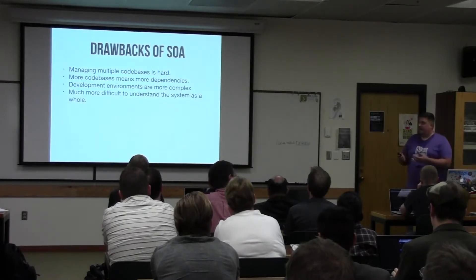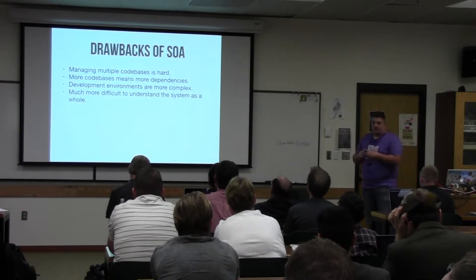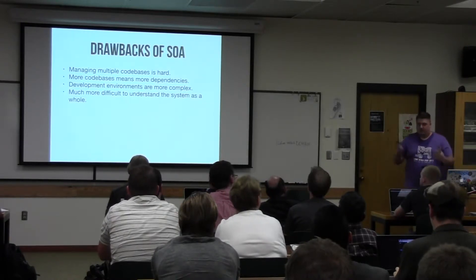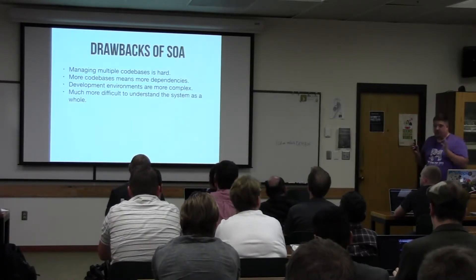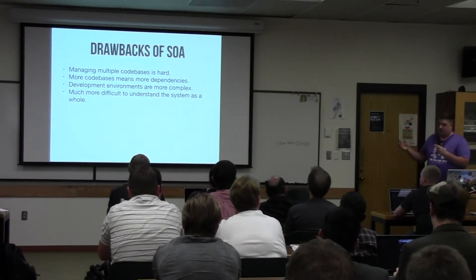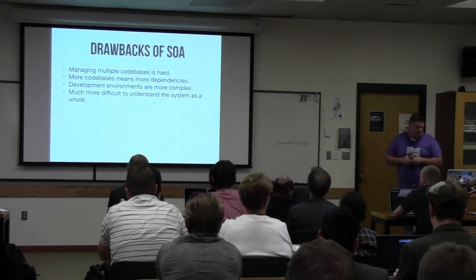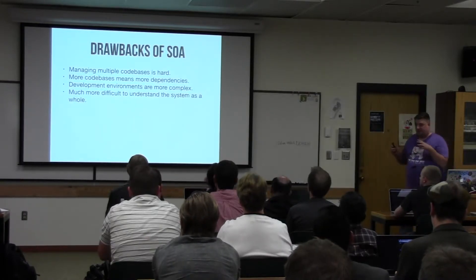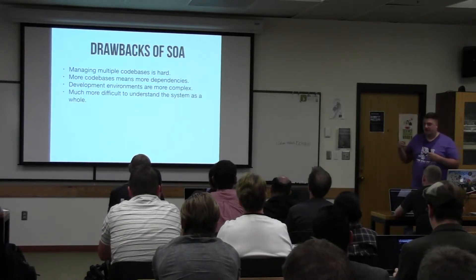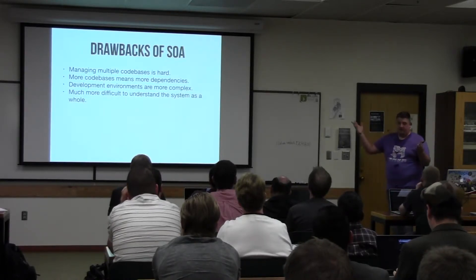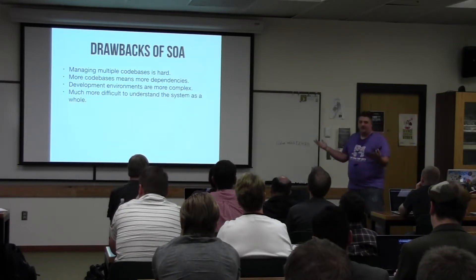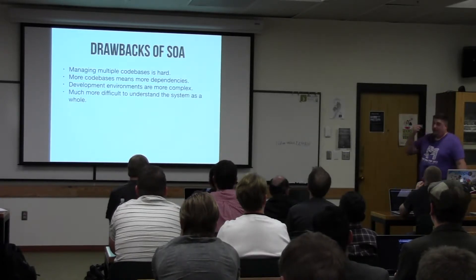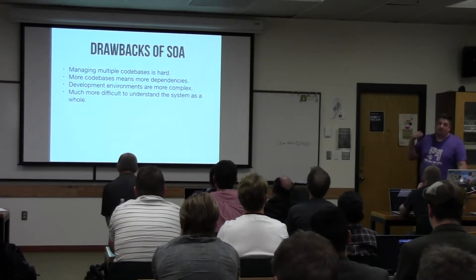The drawbacks of service-oriented architecture: managing multiple code bases is hard. We felt this very early on with five different apps running — dealing with five different repos as one developer is very difficult. More code bases always means more dependencies, and your development environments become more complex. If you have ten services making up your app, ten APIs — how do you start that up in your local environment? Do you spin up ten Vagrant VMs? Yeah, we did that. That's not a good route.